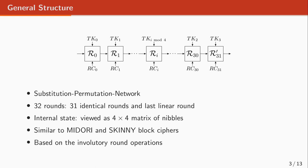The internal state of the cipher is shown by a 4×4 matrix of nibbles. Its overall structure is very similar to the one in SKINNY and MIDORI block ciphers, but there is a big difference: all the round operations used in CRAFT are involutive.